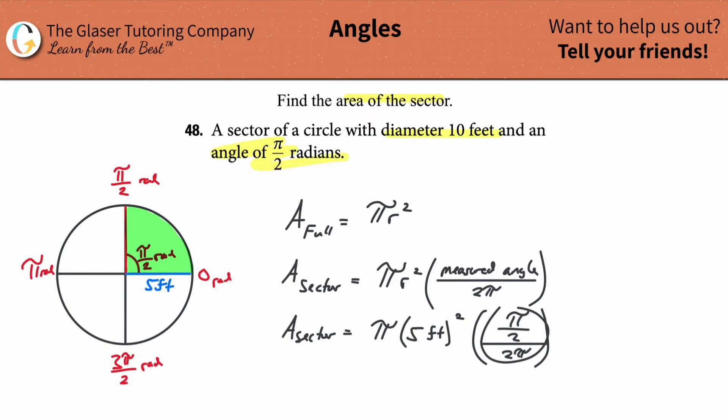So the area of a sector will now be 5 squared, which is 25, so 25π multiplied by—we're going to take the numerator and multiply it by the reciprocal of the denominator. So this denominator could really be written as 2π/1. In other words, I can take the numerator fraction of π/2 and multiply it by the reciprocal of that denominator, 1 over 2π.